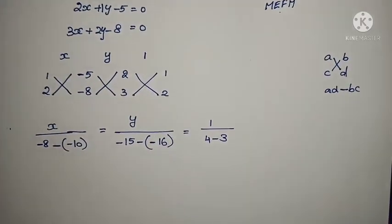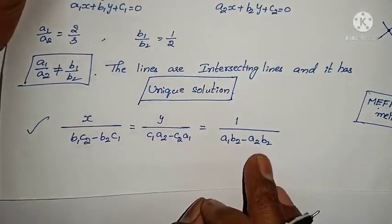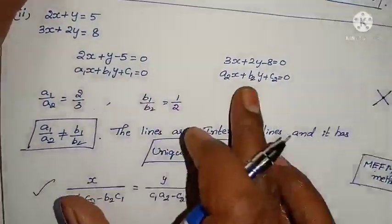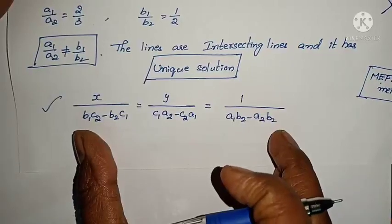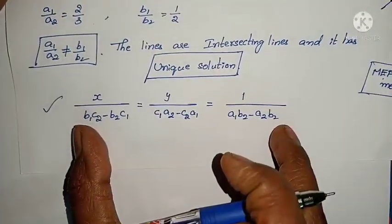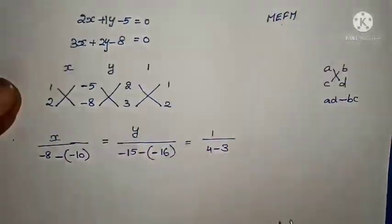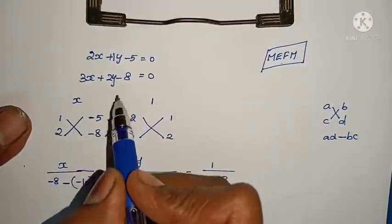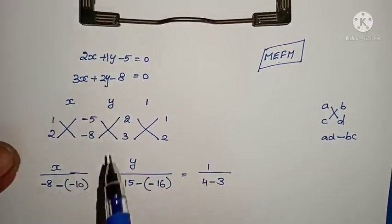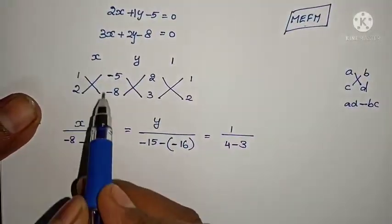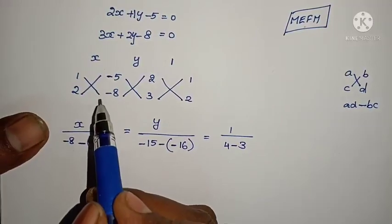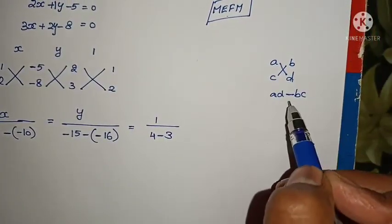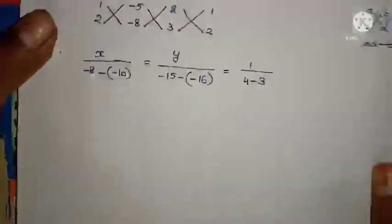If you want, you can remember the formula directly and substitute A1, B1, C1, A2, B2, C2 values. If you think you will forget it, then remember MEFM: middle terms, N terms (constants), first terms, again middle terms — then x, y, constant, just cross multiplication. In cross multiplication it is in the form of ad minus bc. Okay? This is the formula.